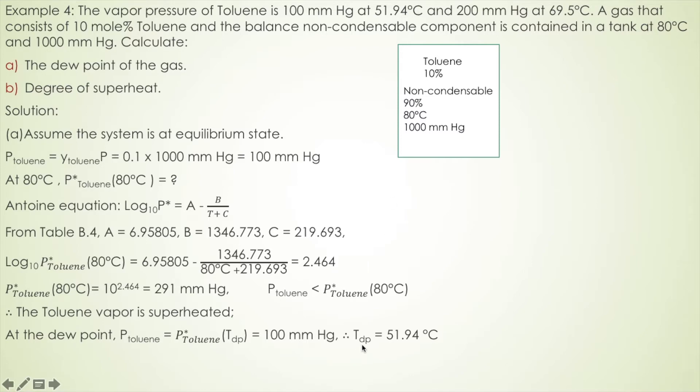Therefore, we can conclude that the dew point is 51.94 degrees Celsius. The degree of superheat is the temperature difference between the system temperature and the dew point, which is 80 minus 51.94 degrees Celsius, and you get 28.06.